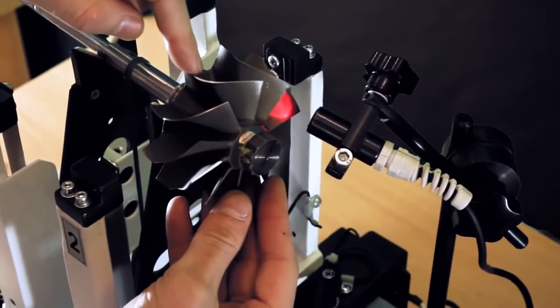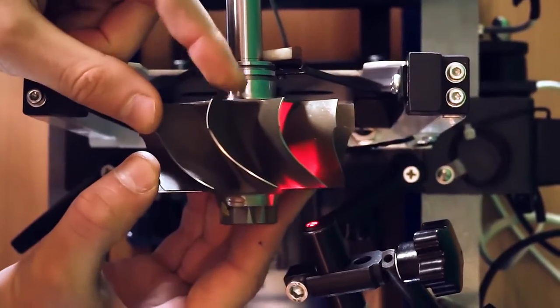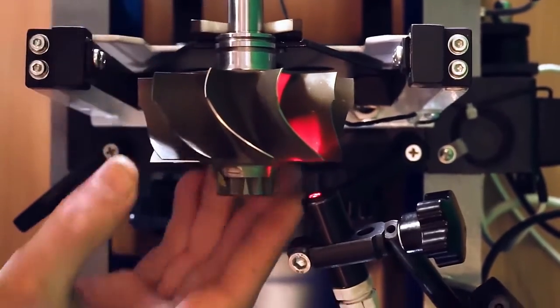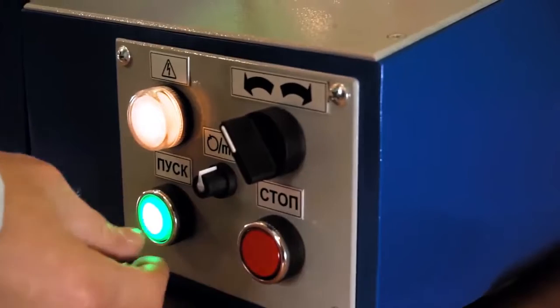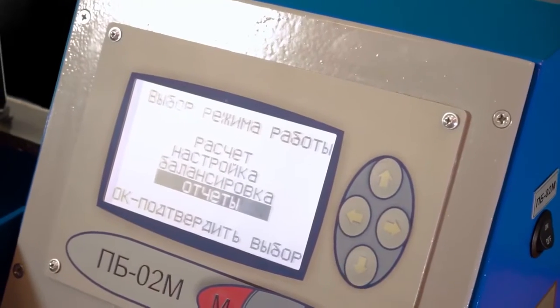Adjustment of the balancing system of the machine is carried out using calibration weights by the method of three starts. Decomposition of corrective loads into structurally determined attachment points of blades, blades, and grooves.